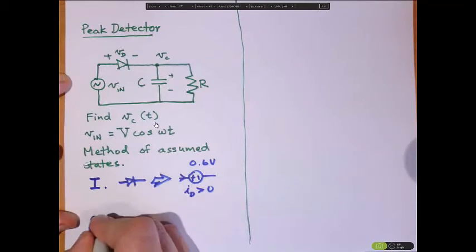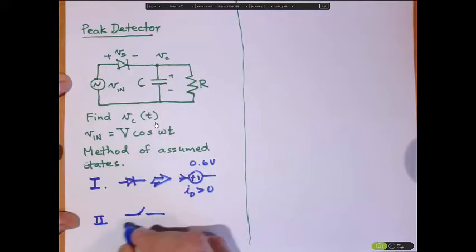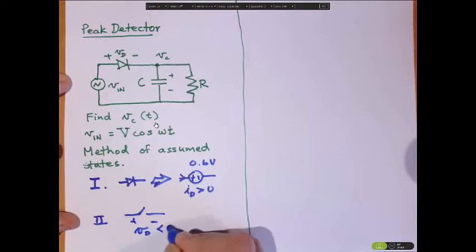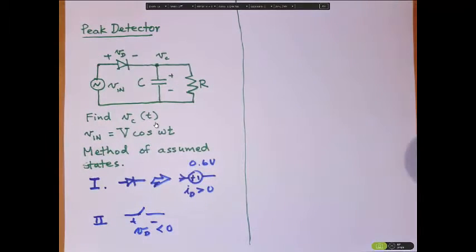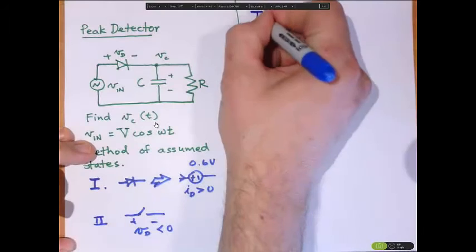And the other state for it is going to be an open circuit when the voltage diode drop is less than zero. As soon as the current starts to try to flow back, the device opens up. And that's why this thing won't discharge.